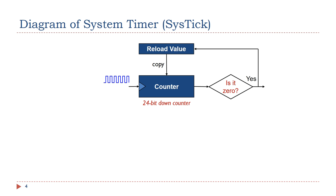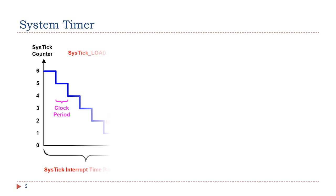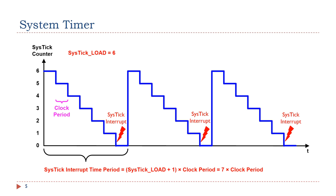The system timer is a 24-bit down counter. The counter decrements from the reload value to 0. After the counter reaches 0, the system timer copies the reload value stored in the reload value register, then the system timer starts to count down again. This diagram shows how the counter value changes when the reload value is 6.